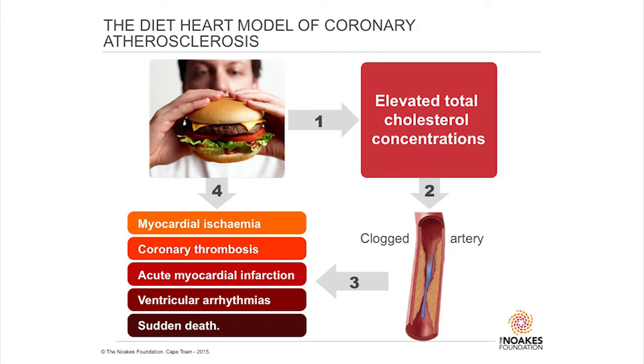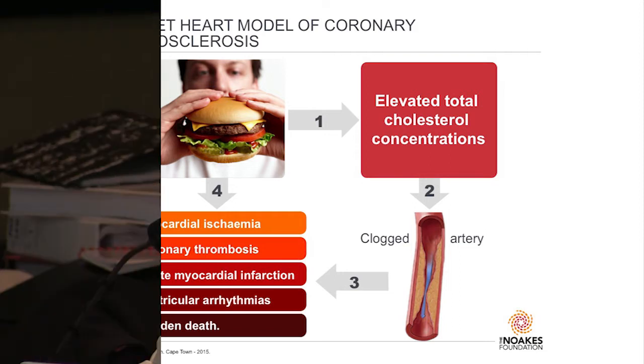They believed they had proved that people living in countries who had lots of fat developed myocardial ischemia and coronary thrombosis. And people didn't bother to go through the other steps — point one, point two, point three.